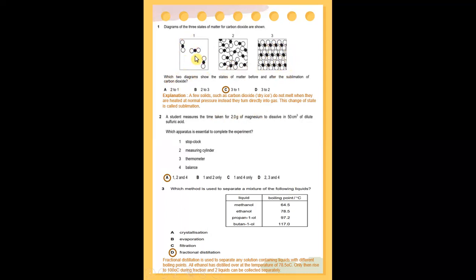A student measures the time taken for two grams of magnesium to dissolve in 50 cm³ of dilute sulphate acid. Which apparatus is essential to complete the experiment? The answer is number one, which is a stopcock, and option two, which is a measuring cylinder. And also, we must have a balance. So, the answer is A.